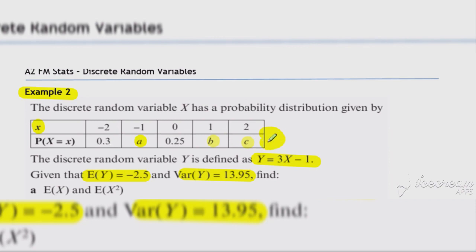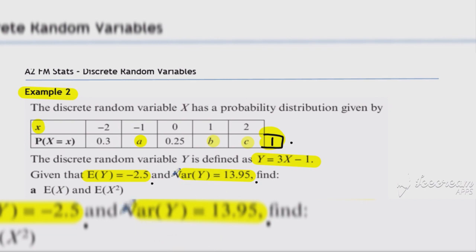The third piece of information is that the total of any probability distribution — the probabilities — is equal to one. So we have three bits of information: probabilities add up to one, expected value of y is minus 2.5, and variance of y is 13.95. Three bits of information and three unknowns, so we can set up simultaneous equations to work out a, b, and c.